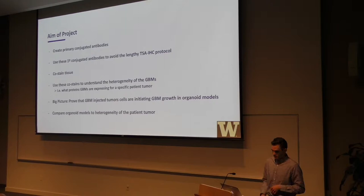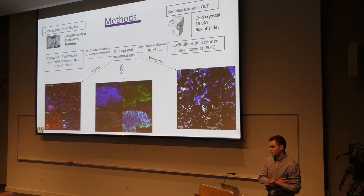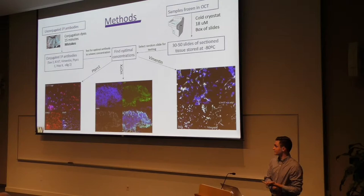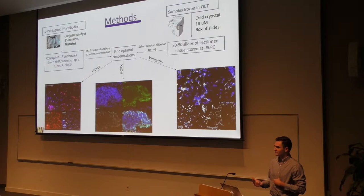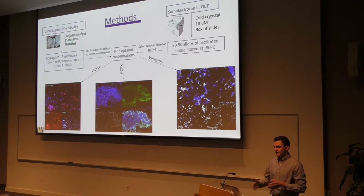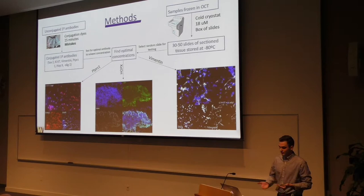Going through the methods quickly — I started from unconjugated antibodies and conjugated them to specific fluorescent dyes. Up on the left, you can see my mistakes. The first time I did this, I made the mistake of adding probably about a hundred times the amount of dye I needed. But this actually helped in the end to enhance the protocol, because when I added the correct amount of dye the next time, we didn't see any signal whatsoever. So I went back and added a little extra dye to all the aliquots, and when we imaged them again, we saw a signal. Sometimes mistakes can work out for you.